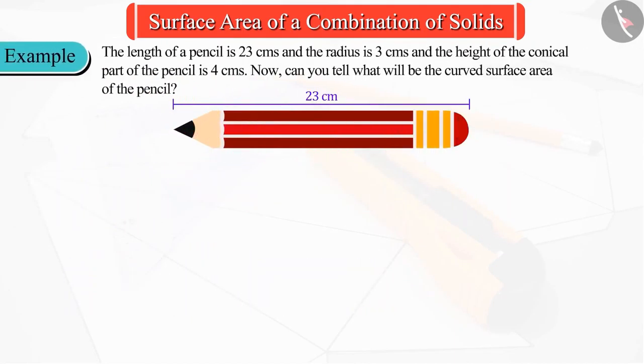The length of a pencil is 23 centimeters, the radius is 3 centimeters, and the height of the conical part of the pencil is 4 centimeters. Now, can you find what will be the curved surface area of the pencil?